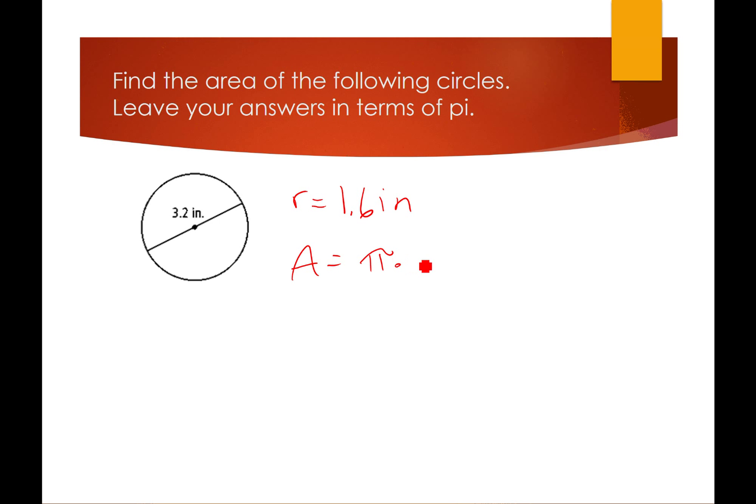So my area is going to be π times 1.6 squared, and that is 2.56, so 2.56π inches squared. And remember, if you're going to change it out of terms of π, then use the π button on your calculator, please.